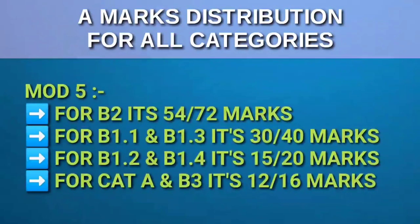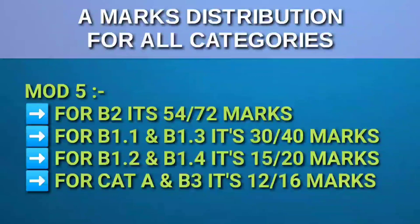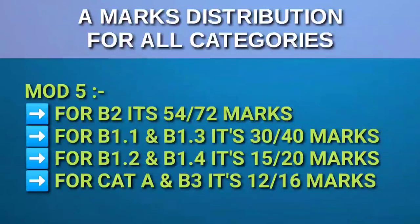Module 5: for B2, it's 72 marks and you need 54 marks for passing. For B1.1 and B1.3, it's 40 marks and you need 30 marks. For B1.2 and B1.4, it's 20 marks and you need 15 marks. For category A and B3, it's 16 marks and you need 12 marks for passing.